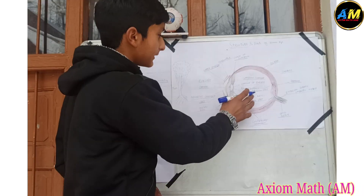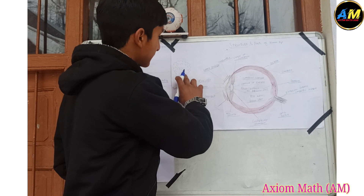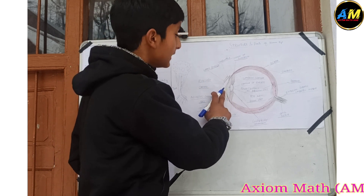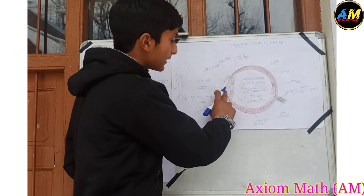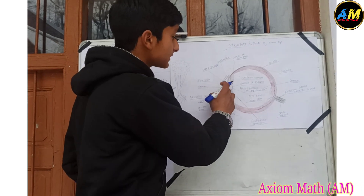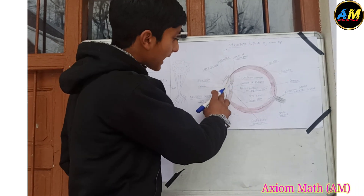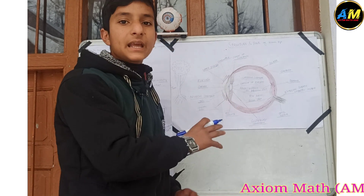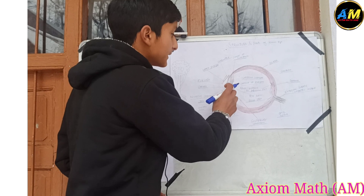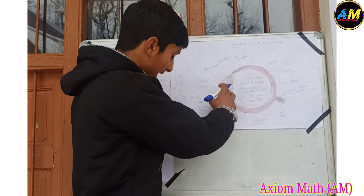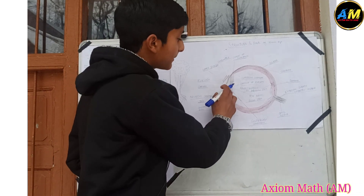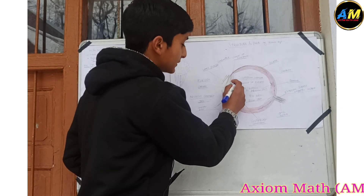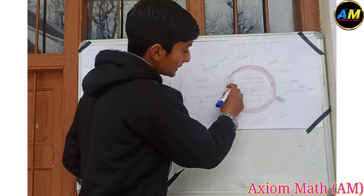Now let us look at the parts of the human eye. The cornea is the transparent covering of the front of the eye — it is a transparent layer that protects and refracts light entering the eye.